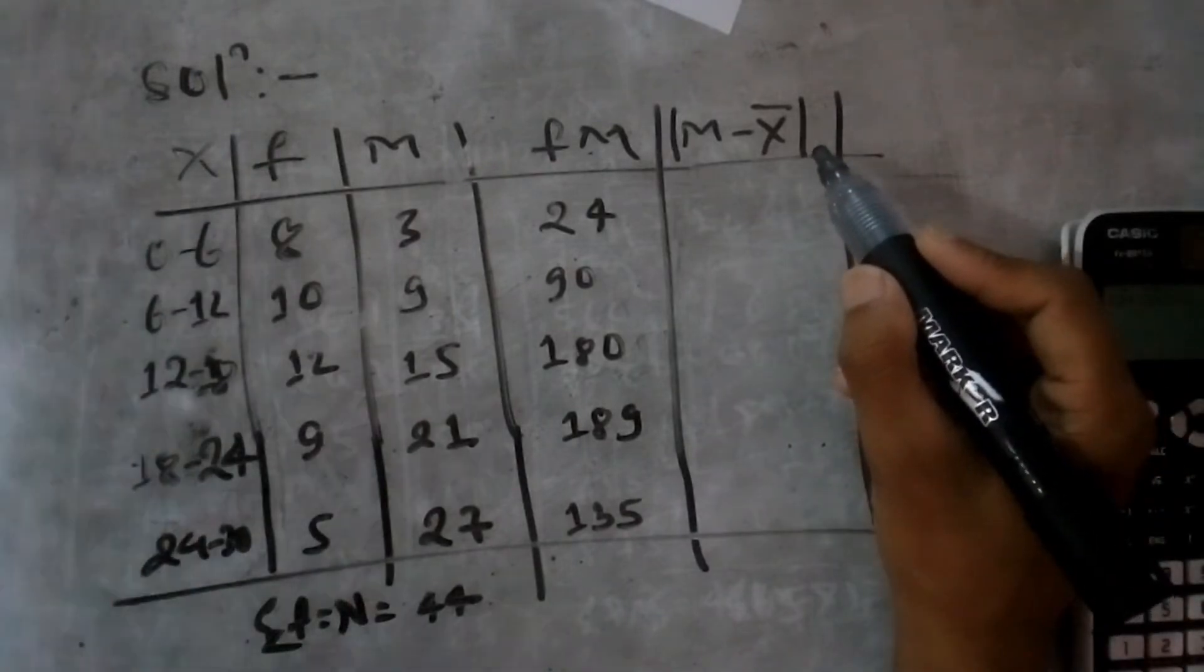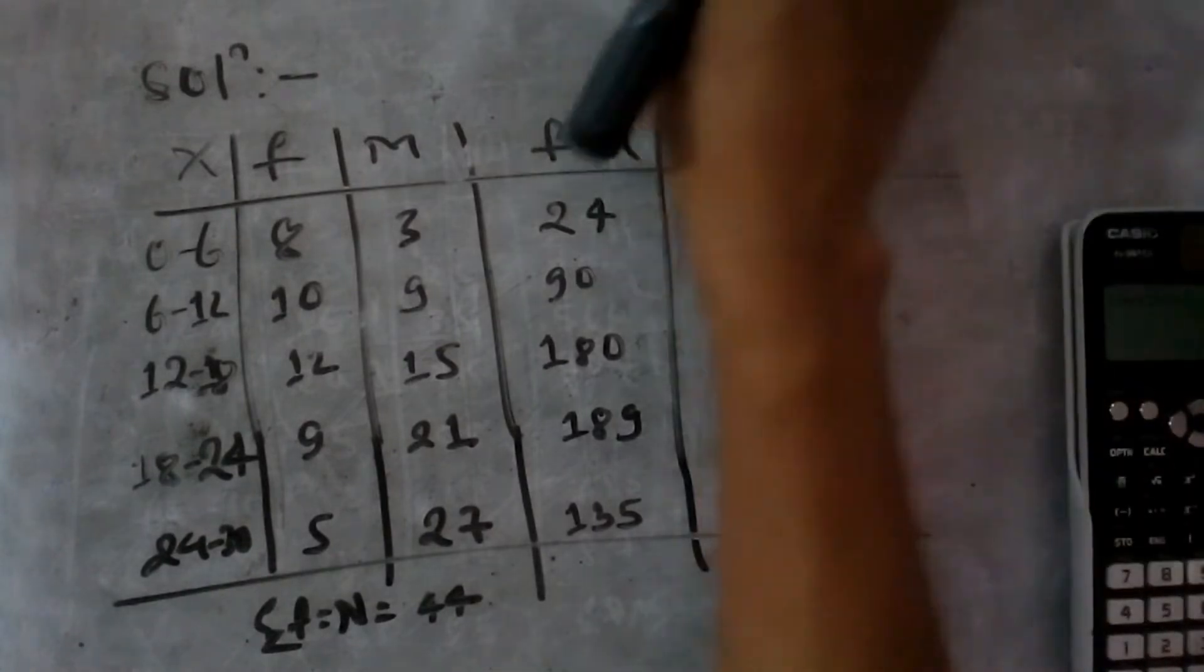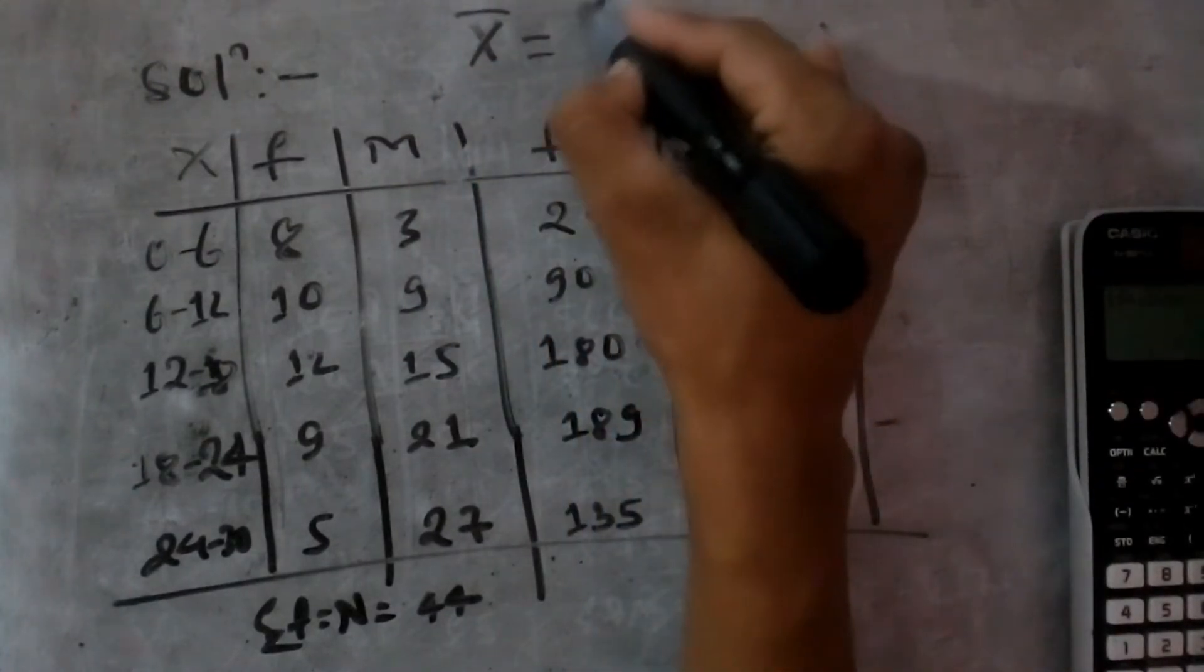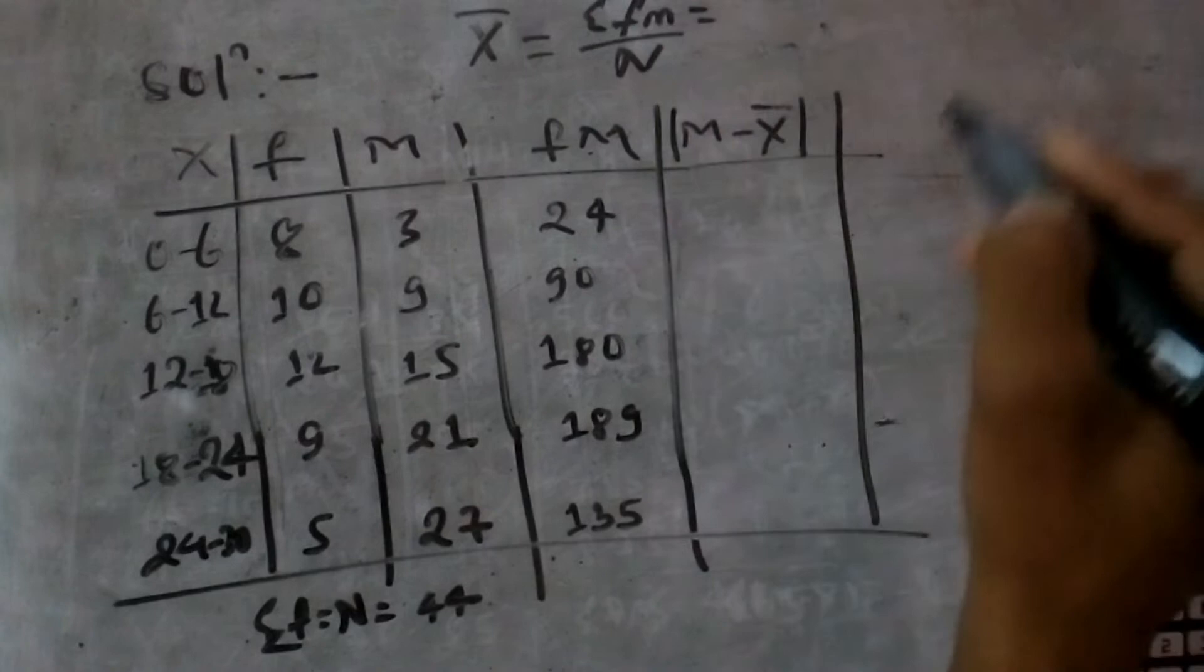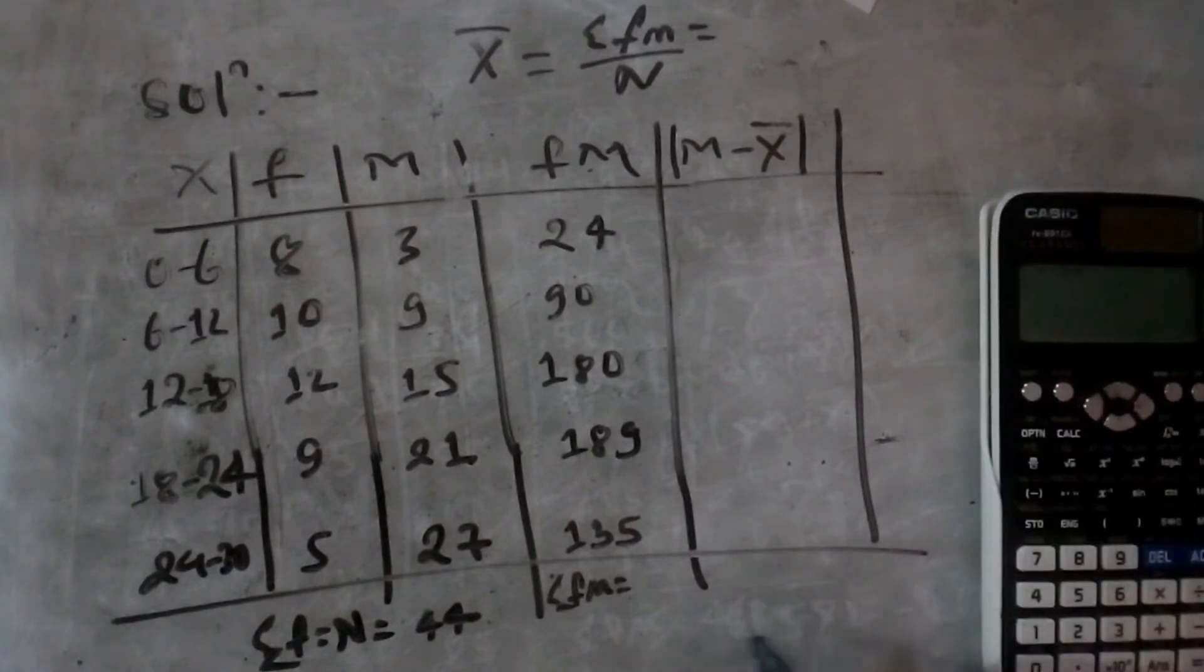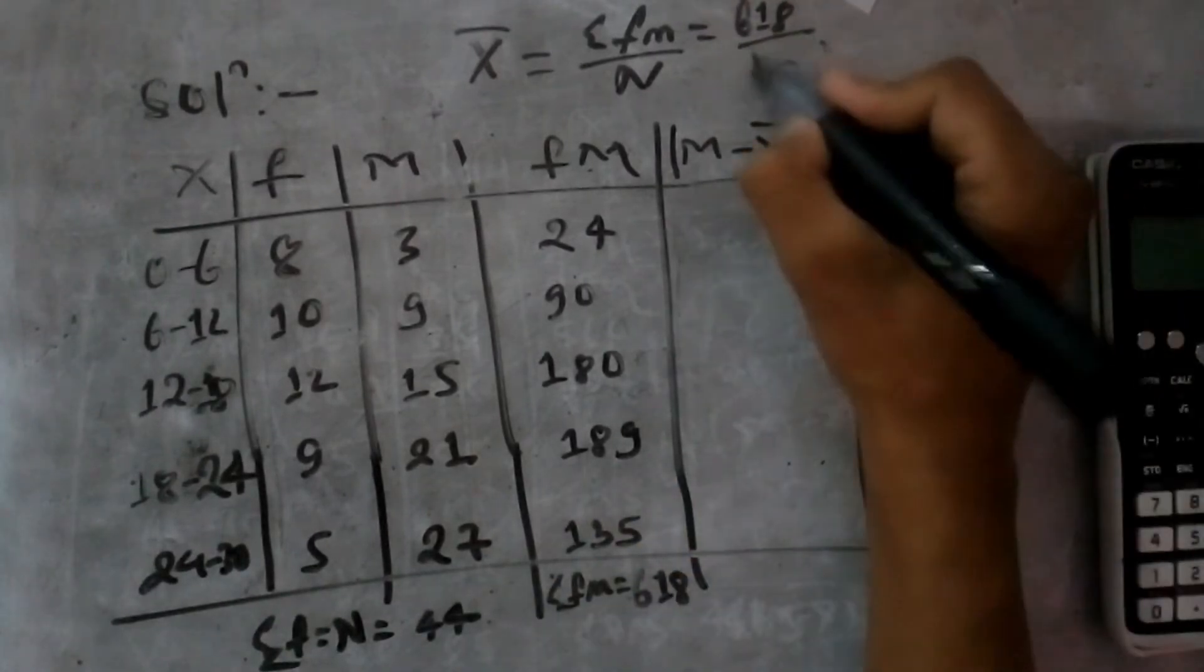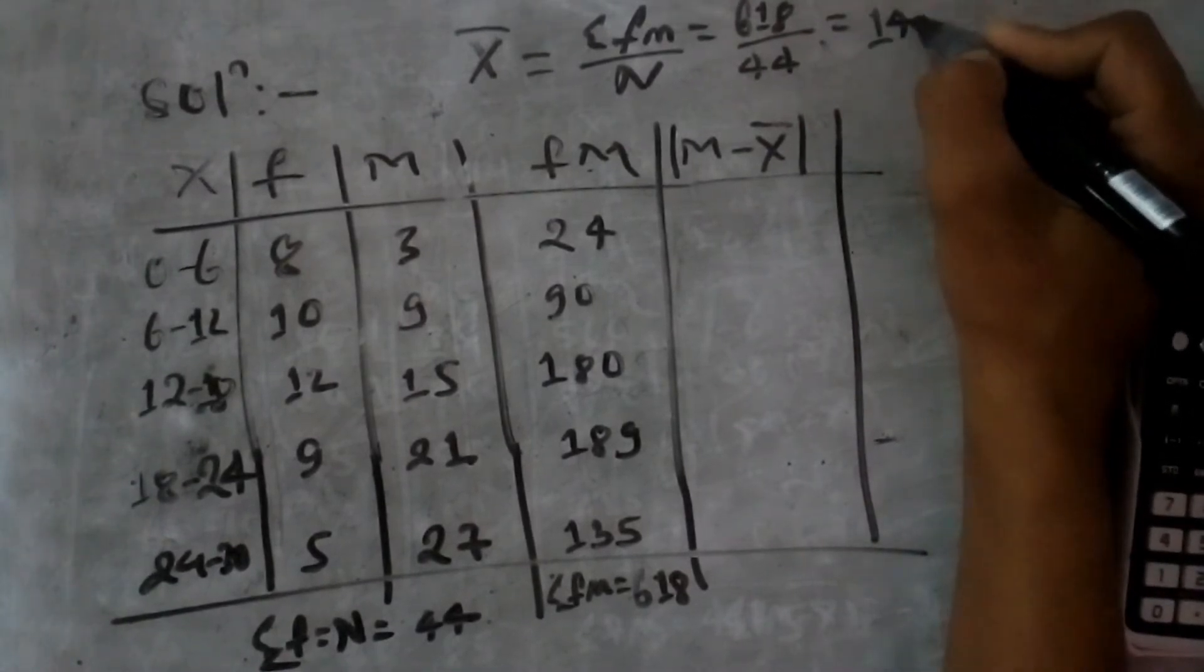Now I'll calculate x bar. Using the formula x bar equals summation of fm by n: summation of fm equals 618, divided by n which is 44, equals 14.